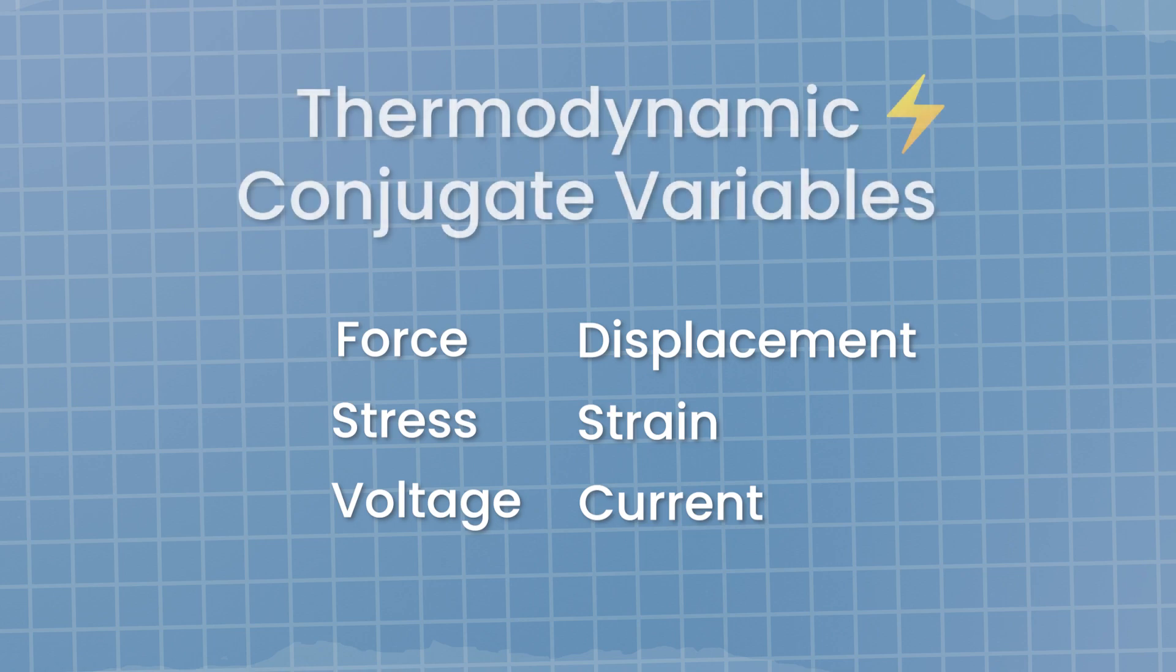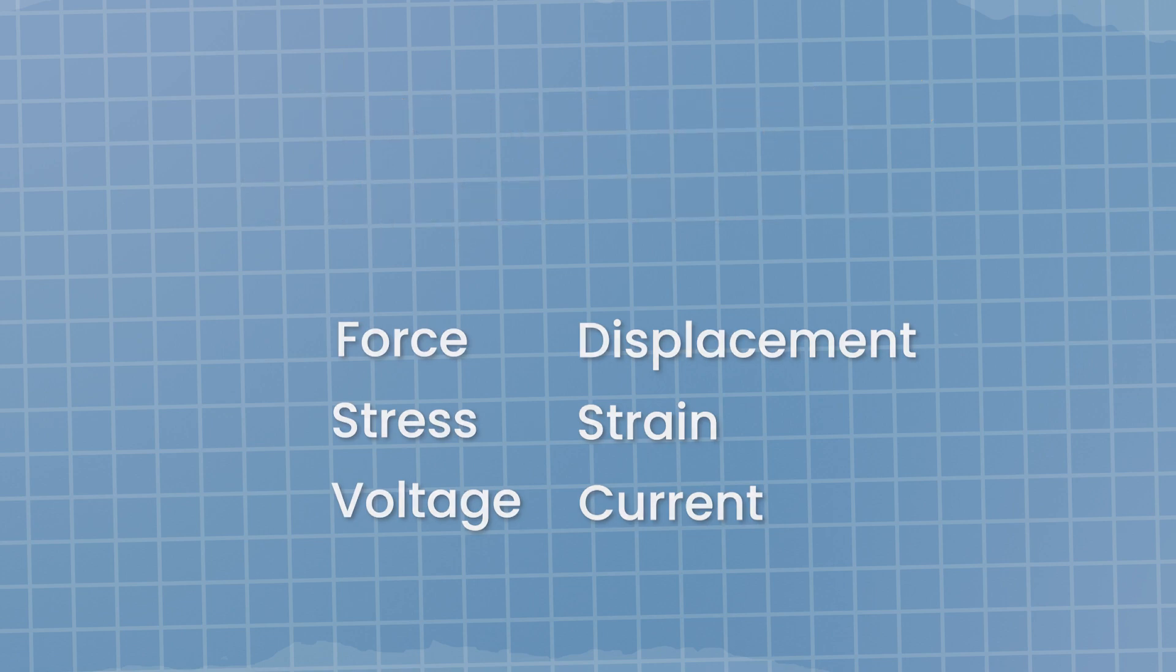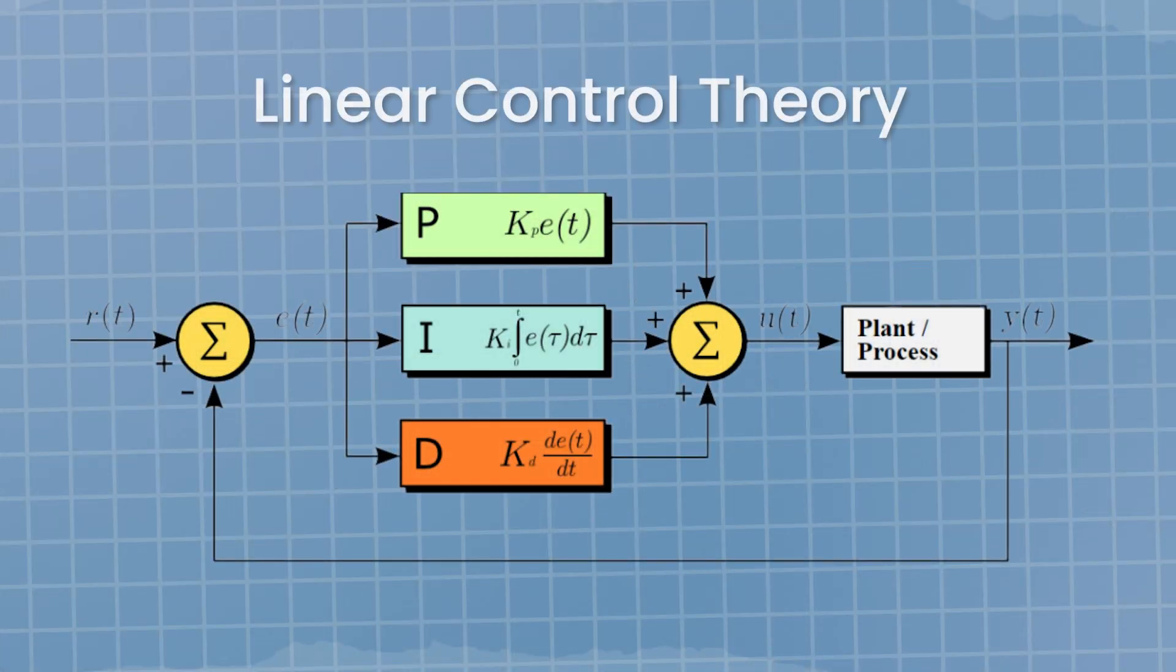They are often thought about as generalized force and displacement, providing an interesting basis for the analogies we found basing ourselves just in the differential equations describing the systems. It is also pretty useful in the modeling needed in linear control theory. Our description of a system composed of multiphysics components obeys a common description and can be discussed using the same language. Considerations regarding causality and stability are applicable to all these systems. They are fundamental if we want to control anything.